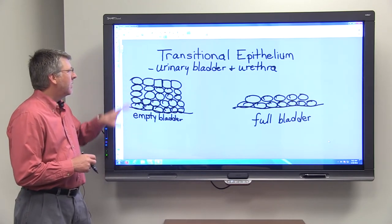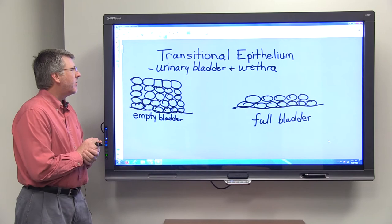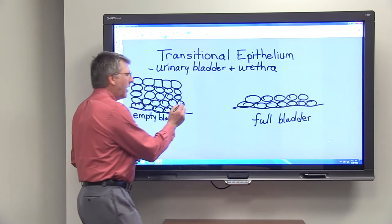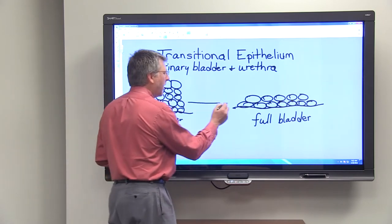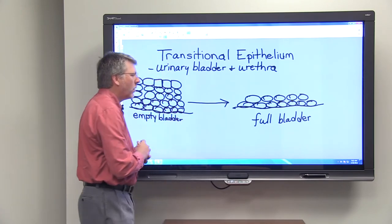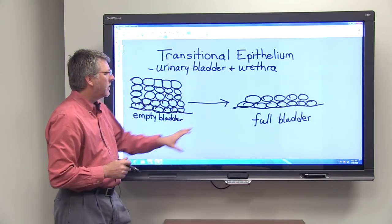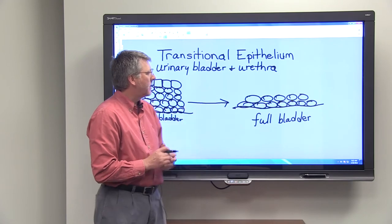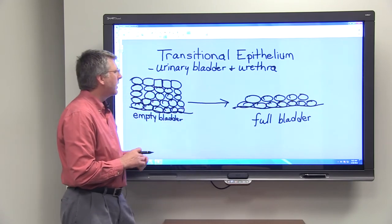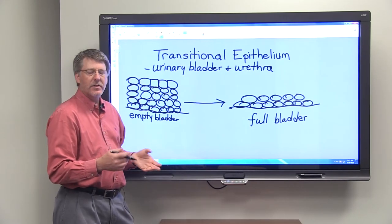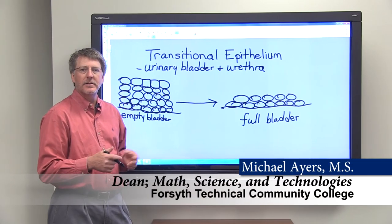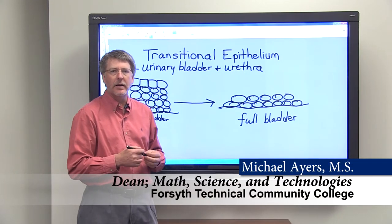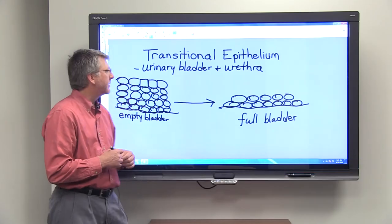When the bladder is empty, transitional epithelium appears to have many different layers. But as the bladder stores more and more urine, the number of layers in transitional epithelium appears to decrease. This tissue is called transitional epithelium because it's able to undergo transitions as the bladder fills and empties.